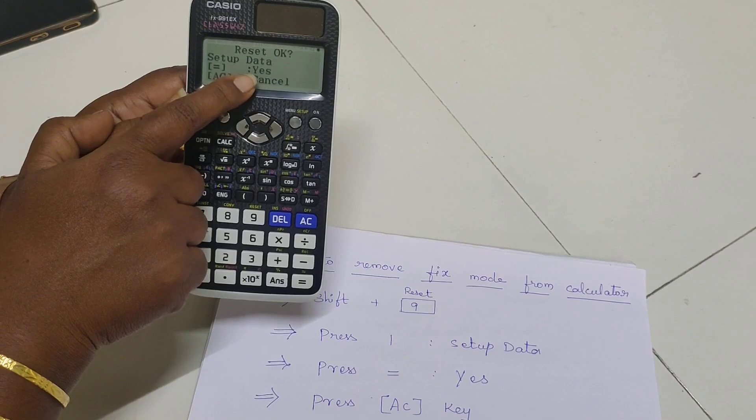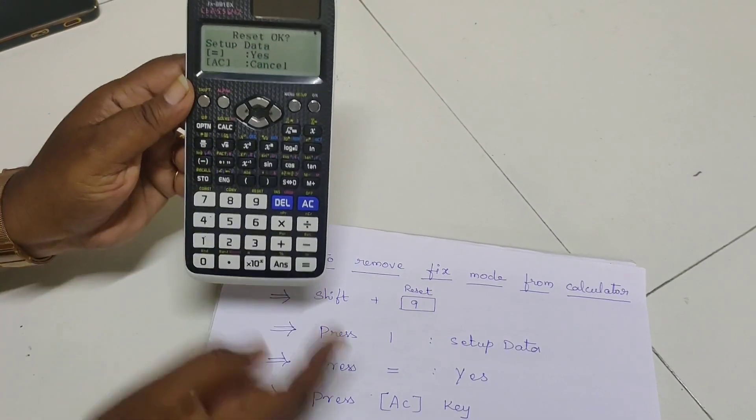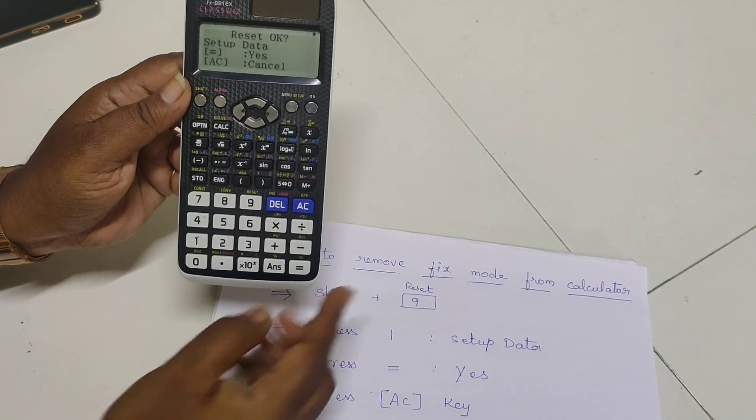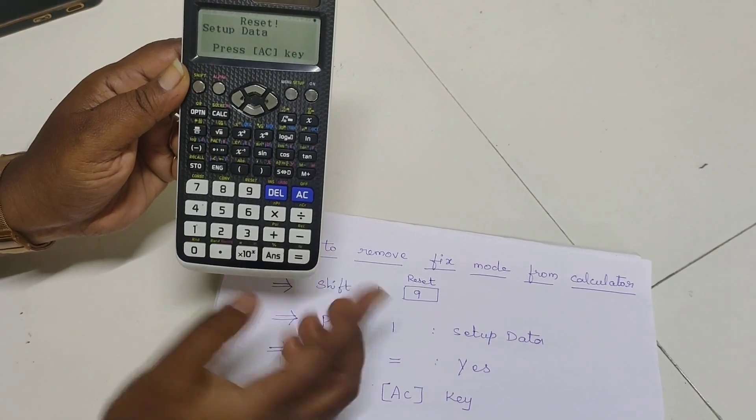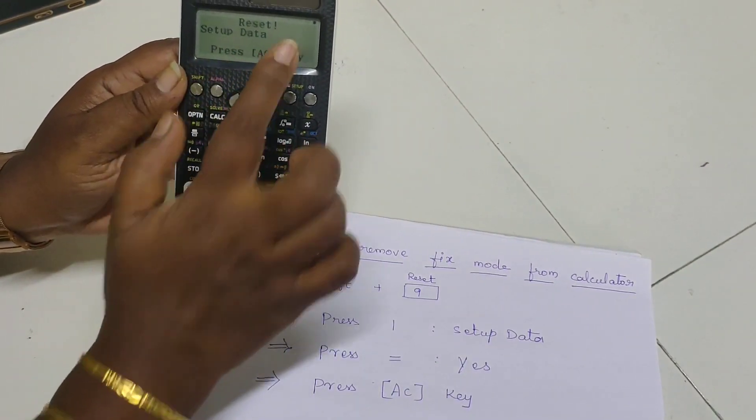After that it is asking if it is yes press equal to. Yes, we are going to accept it. Press the equal to button. And the next press AC key.